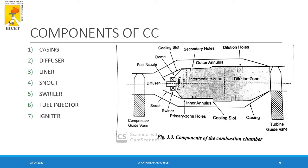The basic components of a combustion chamber are the casing, diffuser, liner, snout, swirler, fuel injector, and igniter, all of which are shown in the diagram on the right-hand side.